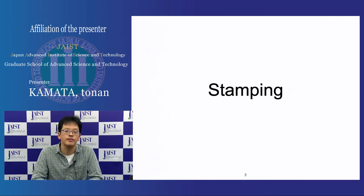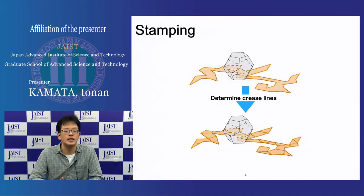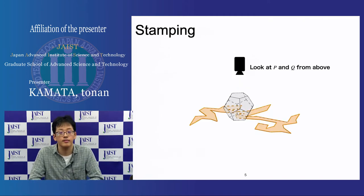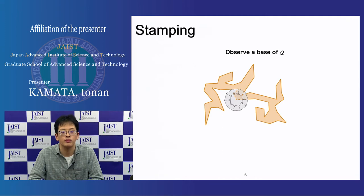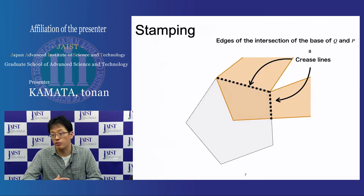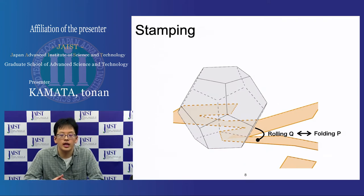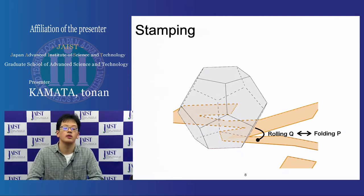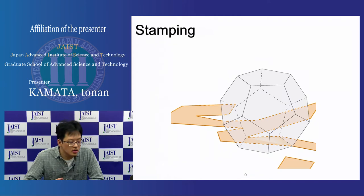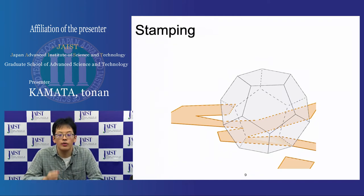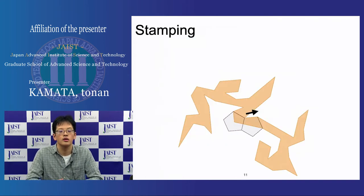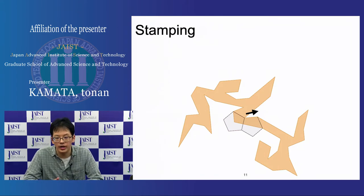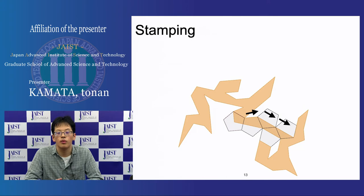The first topic is stamping. Stamping is an operation to determine crease lines. Looking at the polygon and the polyhedron from above and observing the base of the polyhedron, edges of the intersection of the base of the polyhedron and the polygon should be crease lines. We consider the rolling of the polyhedron instead of the folding of the polygon. By rolling the polyhedron, we can find a new base and new crease lines.